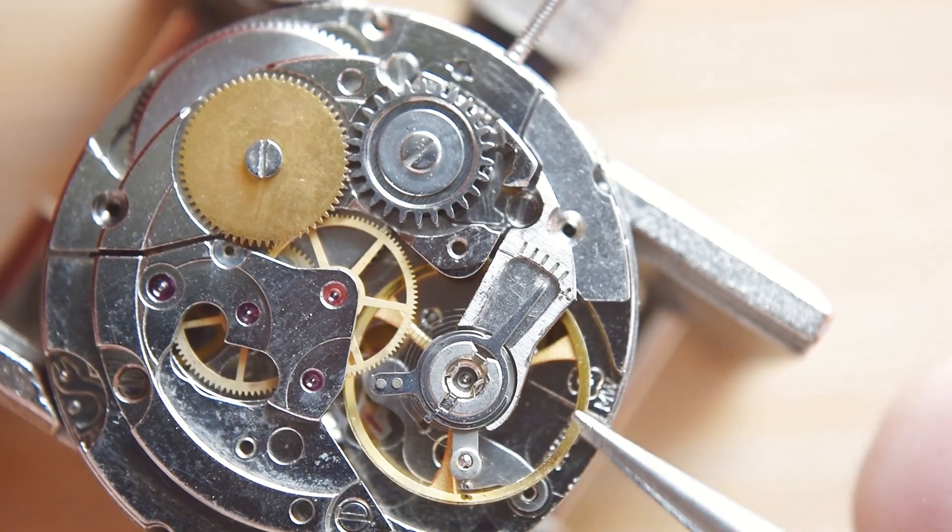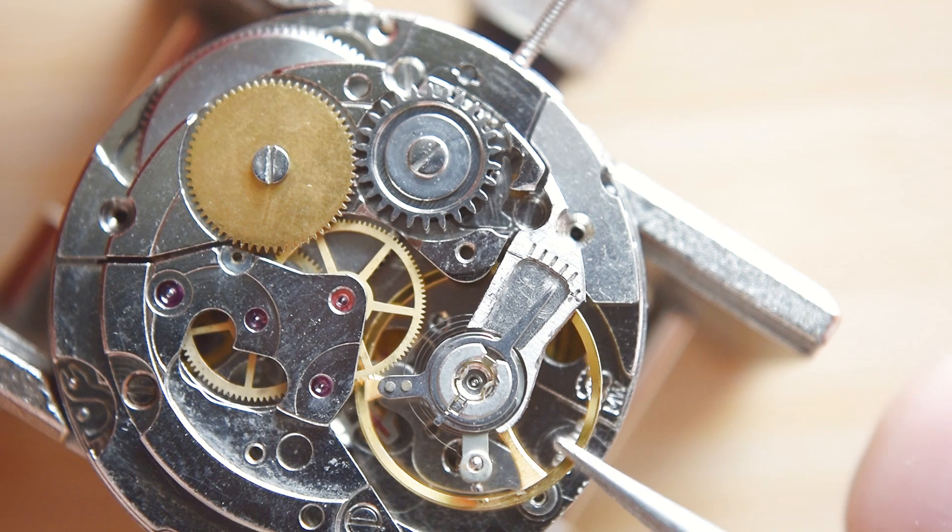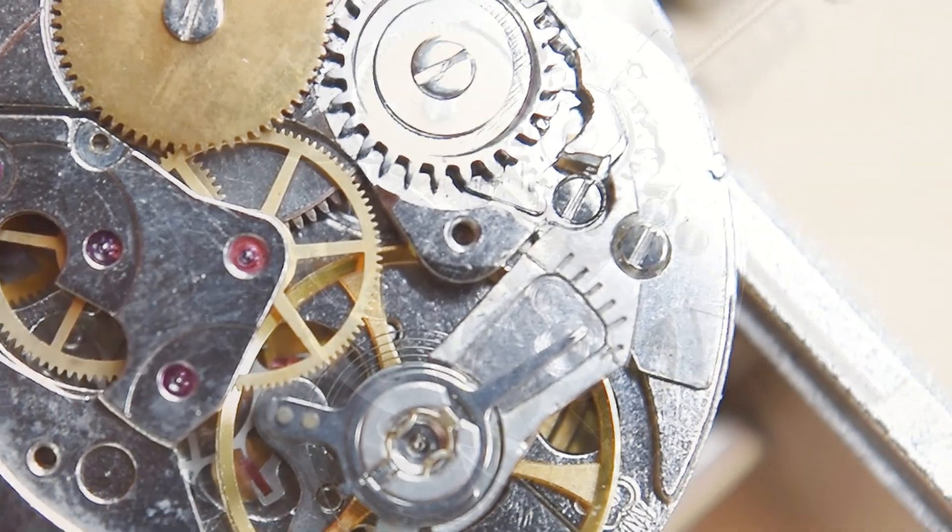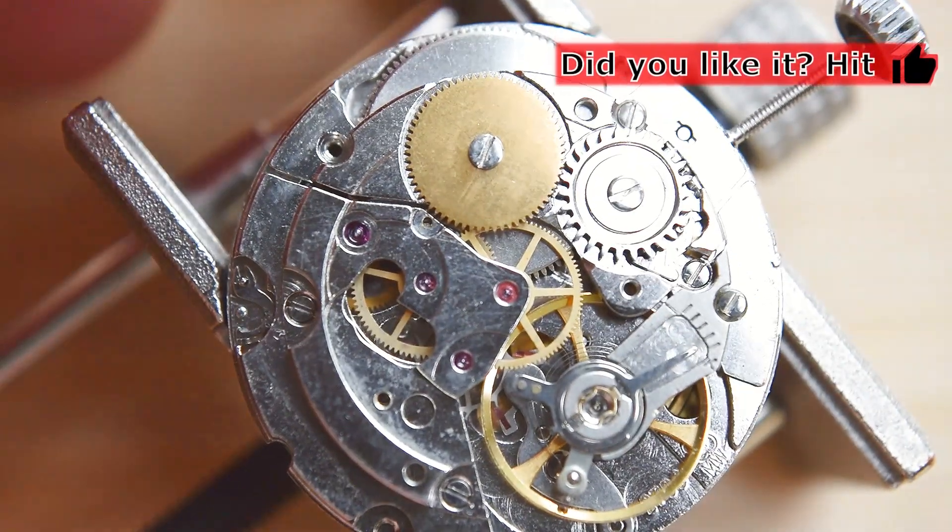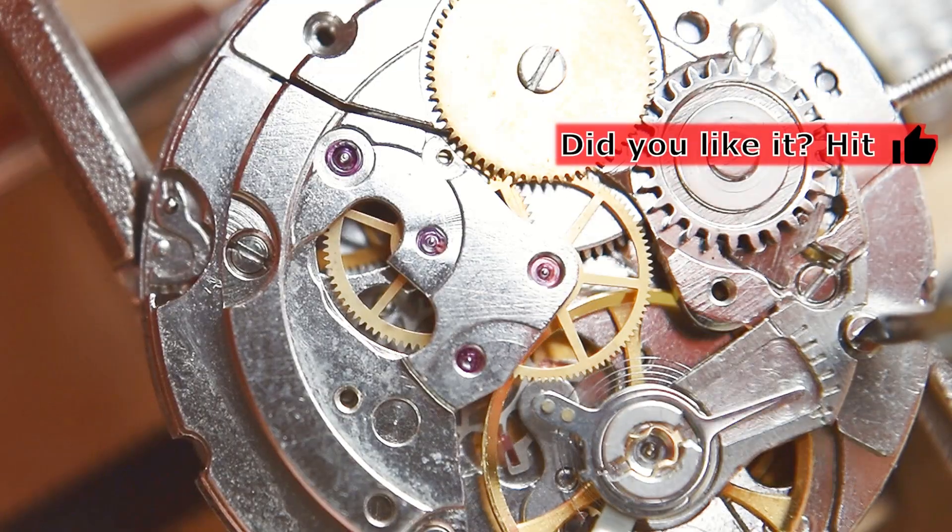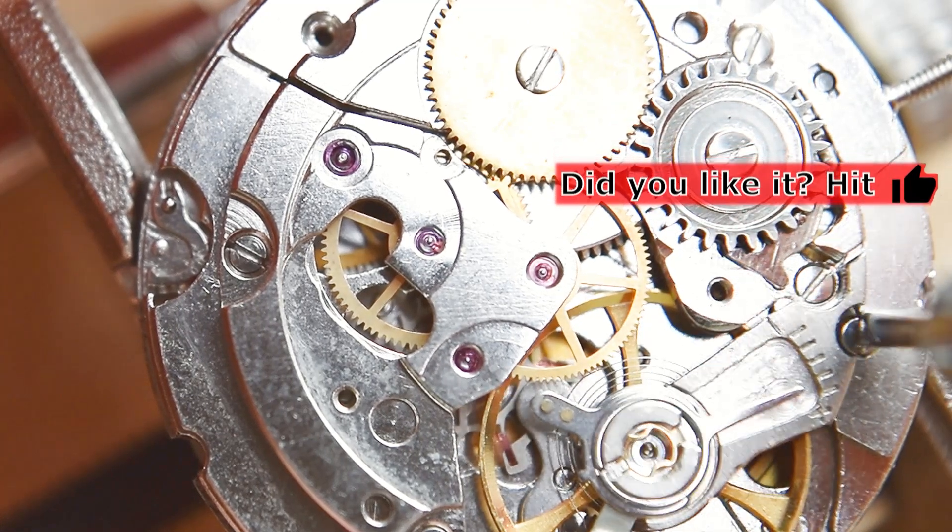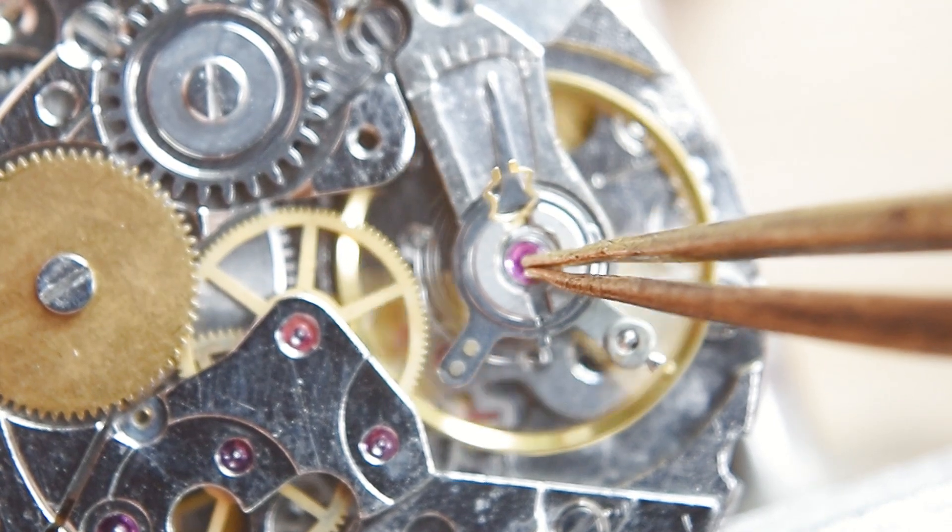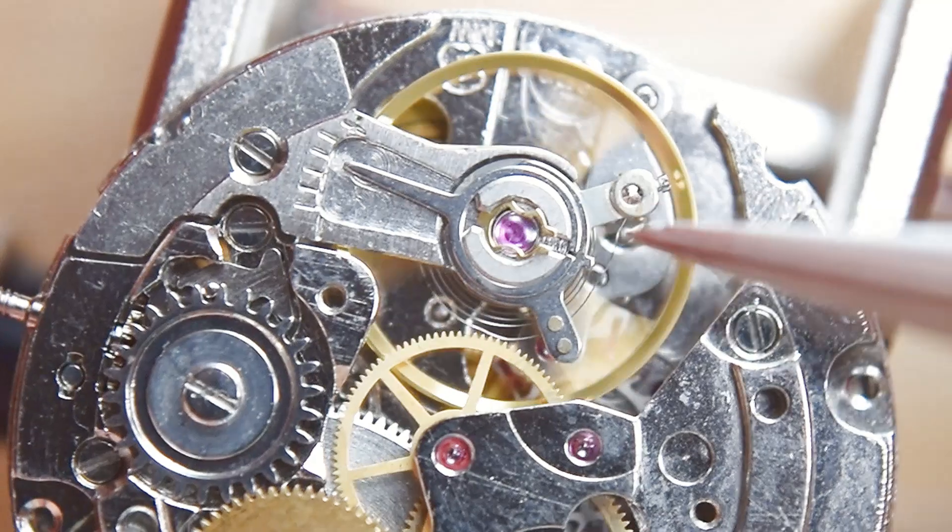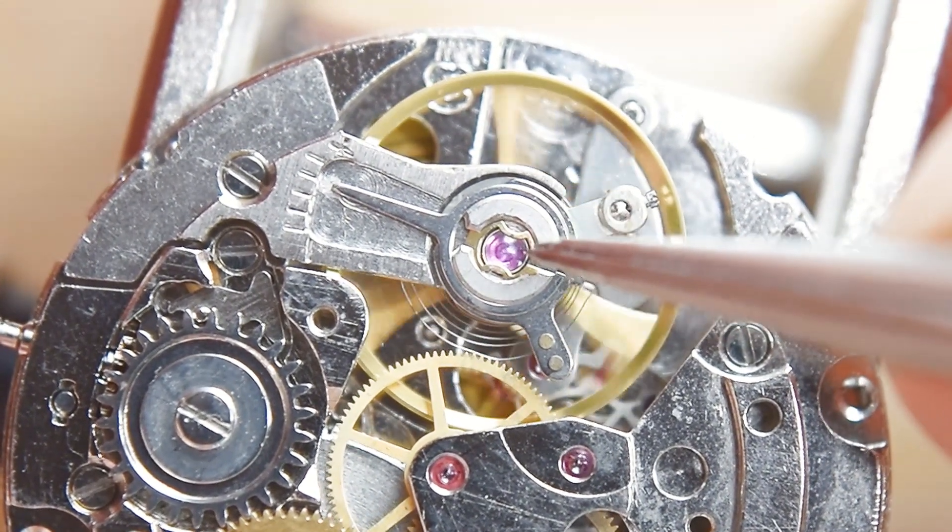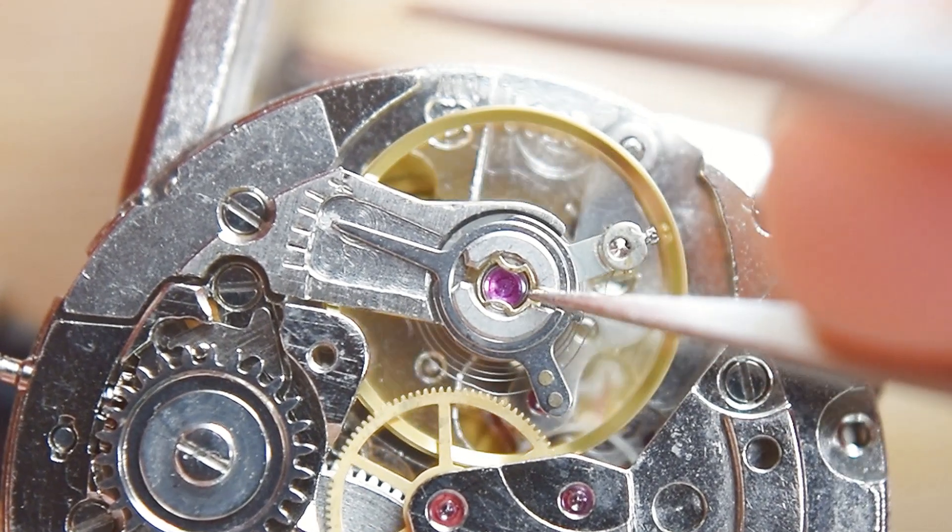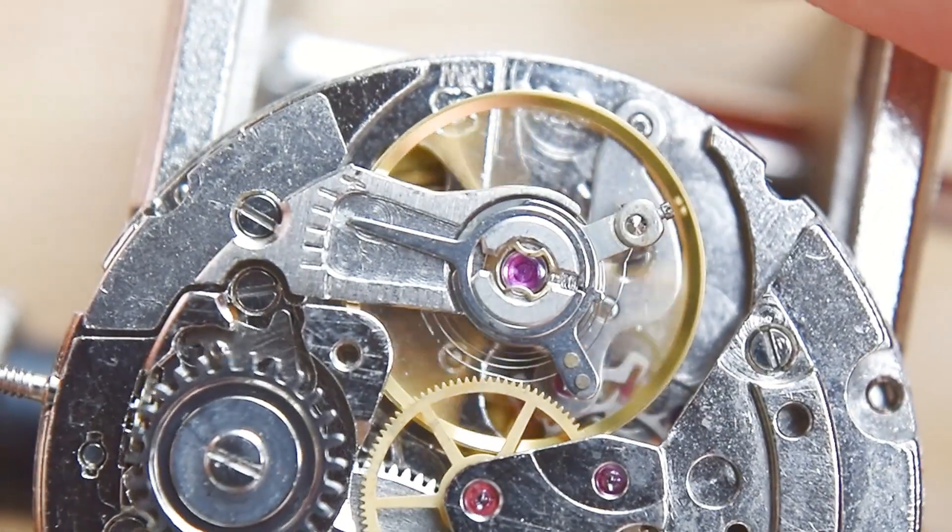But it's quite easy and don't worry, I have very similar movement. Probably I will also make a service video about this movement. It will also be ETA 27, but not 90, I think it will be 80 or something like that. And you will see everything in this video. Don't worry about that. The last thing of this video will be this jewel. Let's secure it. I think it sits correctly here.